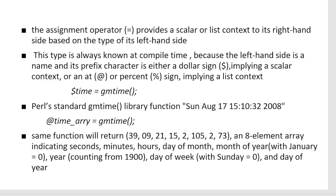The assignment operator in Perl provides a scalar or list context to its right-hand side based on the type of its left-hand side. Perl's standard 'gmtime' library function, when called, returns the current date and time. When assigned to an array such as '@r = gmtime()', the function returns an 8-element array containing seconds, minutes, hours, day of month, month of year (January = 0), year from 1900, and day of week (Sunday = 0).